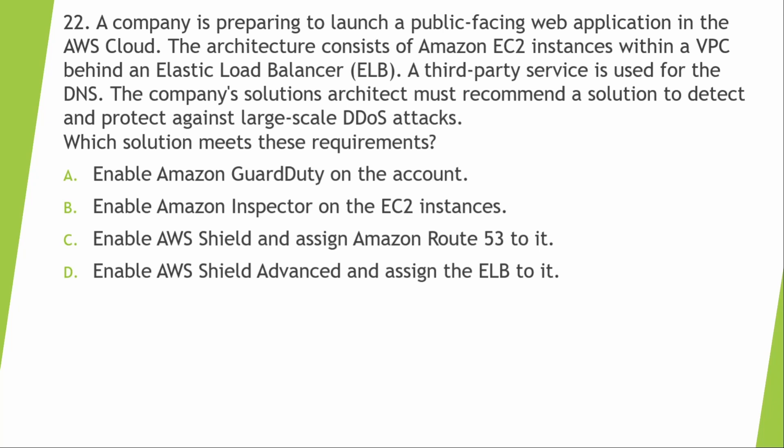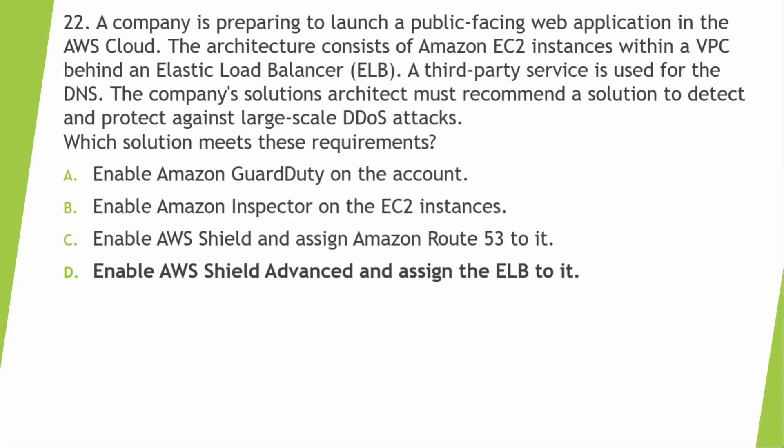A company is preparing to launch a public-facing web application on AWS. The architecture uses EC2 instances within a VPC behind an ELB. A third-party service — not Route 53 — is used for DNS. The solution architect must detect and protect against large-scale DDoS attacks. DDoS attacks point to AWS Shield. Option C assigns it to Route 53, but the company uses a third-party DNS, so that's wrong. The correct answer is to enable AWS Shield Advanced and assign the ELB to it.